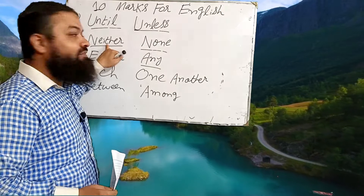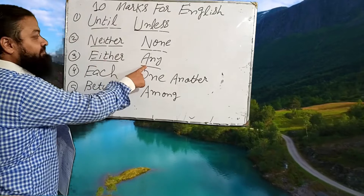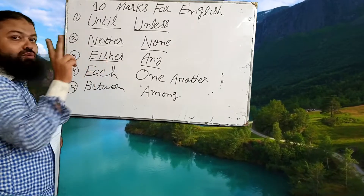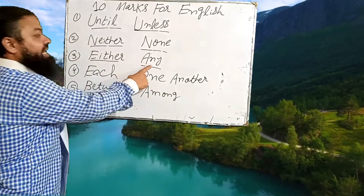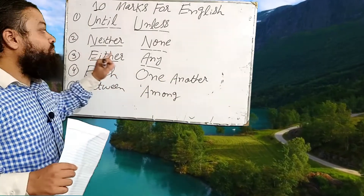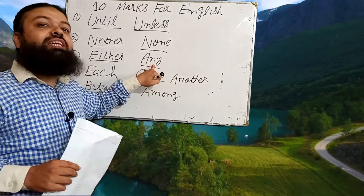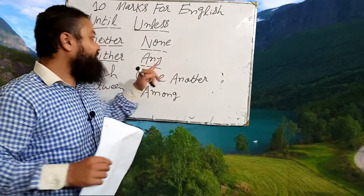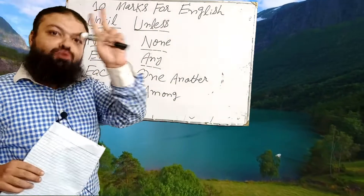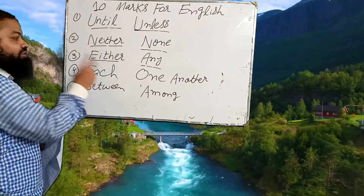The third one is 'either' and 'any.' They are both used for the positive sense. 'Either' is used for two persons or two things, and 'any' is used for three or more. For example, 'either of the two boys have stolen the books' is correct. 'Any of the three boys have stolen the books' is correct — 'any' is used for three or more, and 'either' is used for two.